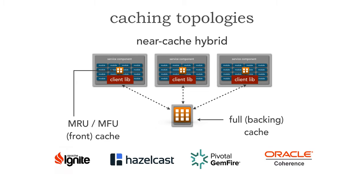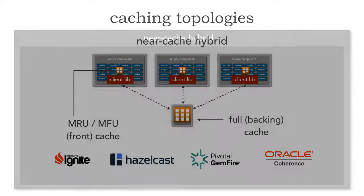Now, because this is very similar to a replicated cache, the primary four caching tools or technologies that do support a near cache are Apache Ignite, HazelCast, Gemfire, and Oracle Coherence. You can use any of those four — these are the primary ones available to support a near-cache hybrid.